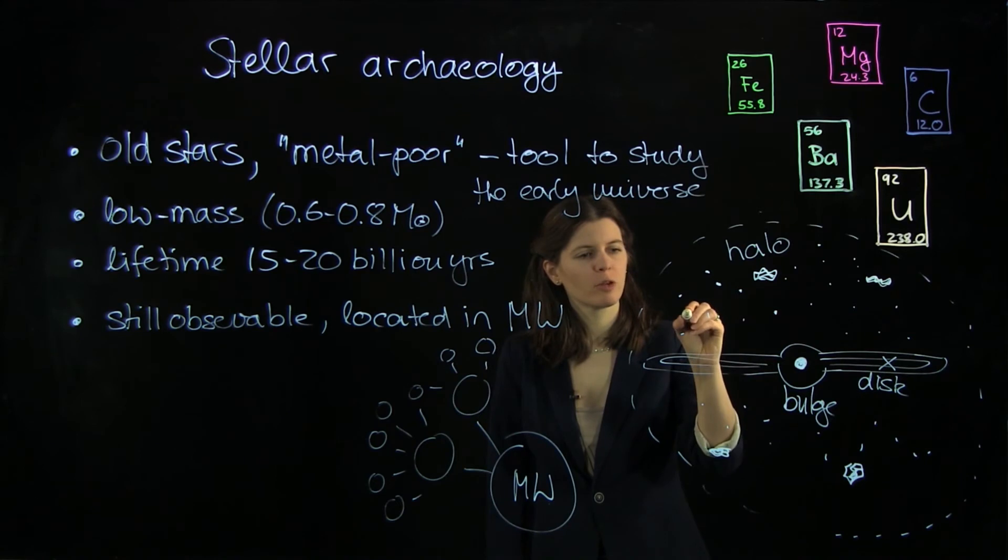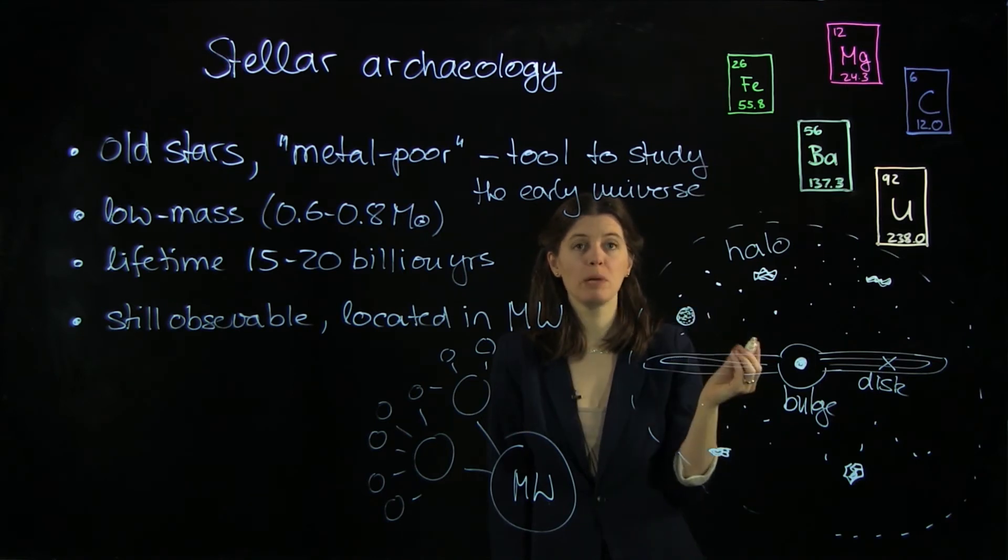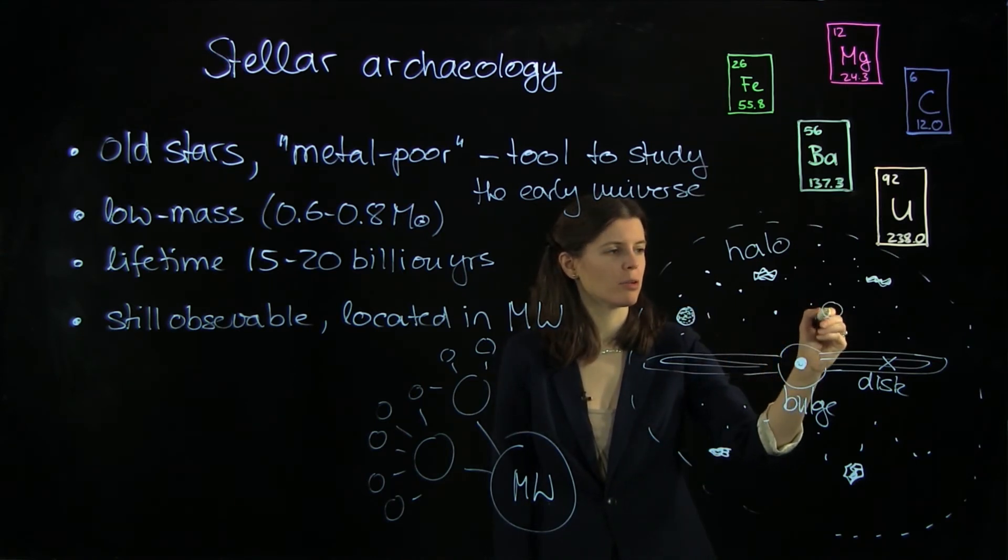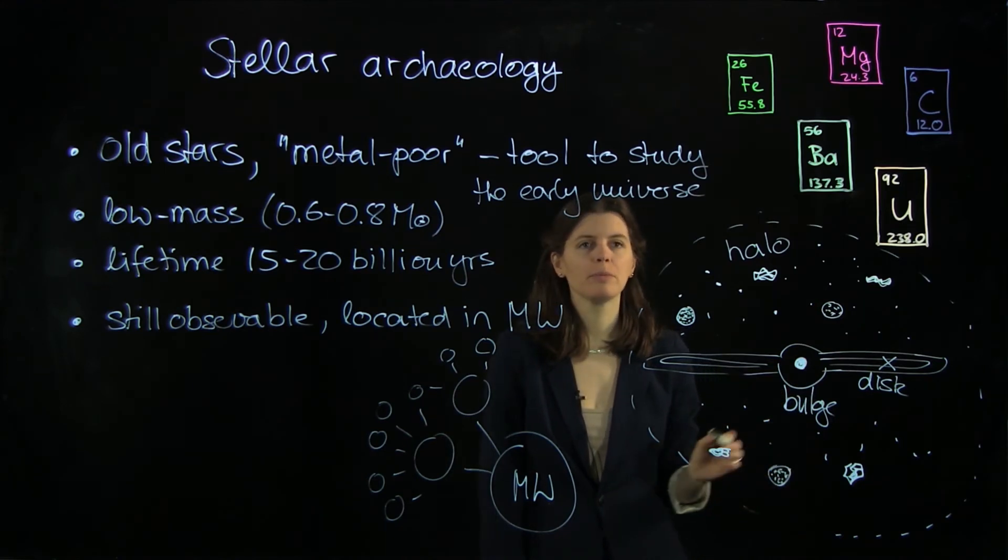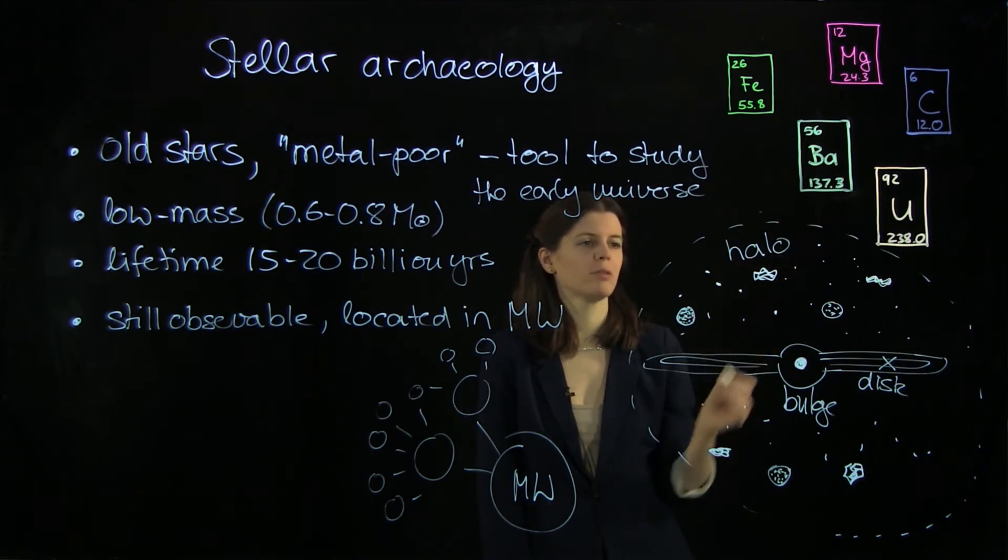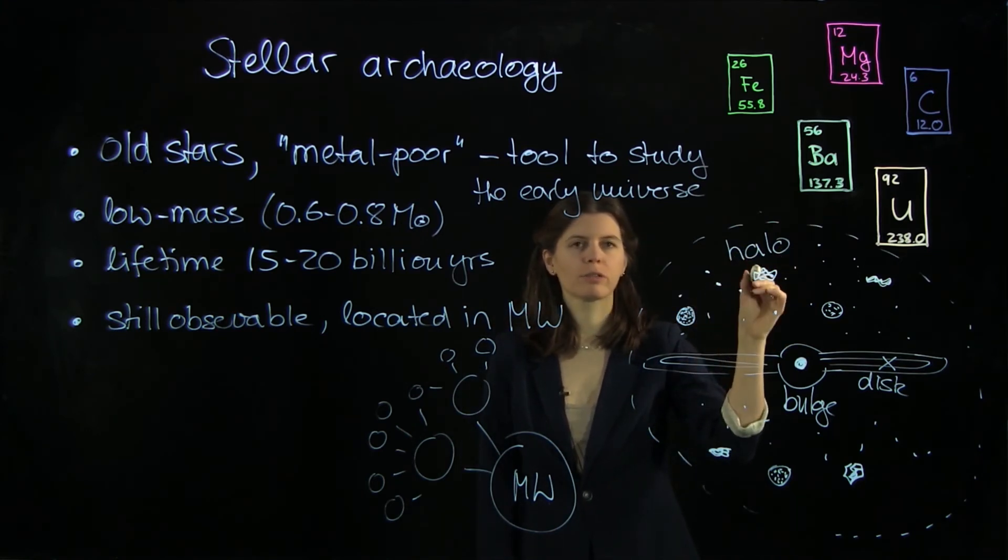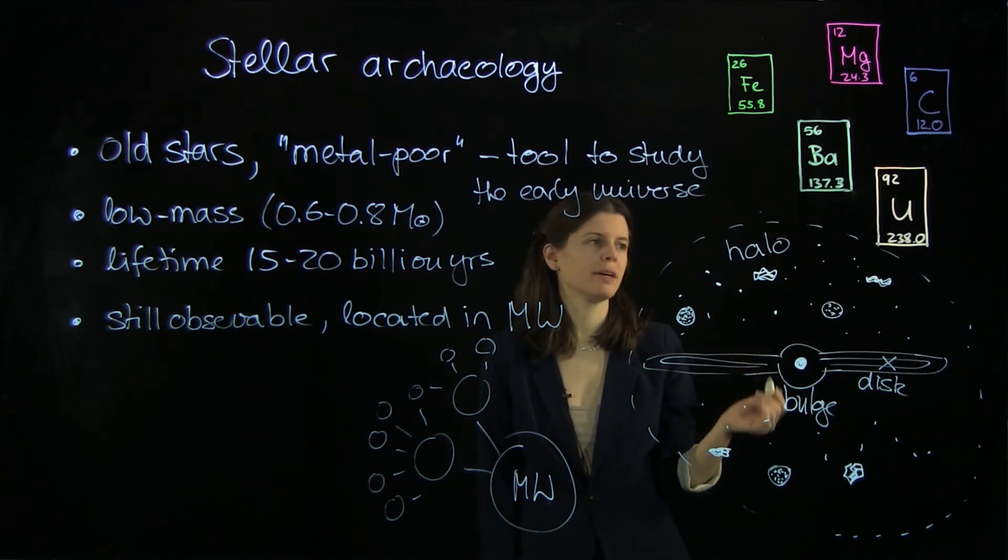And we also have globular clusters. These are clusters of stars with up to a million stars. And they are also located here and down here. And they're also really old. We don't really know where they come from. So the halo contains mostly three things: globular clusters, dwarf galaxies, and then lots of old stars.